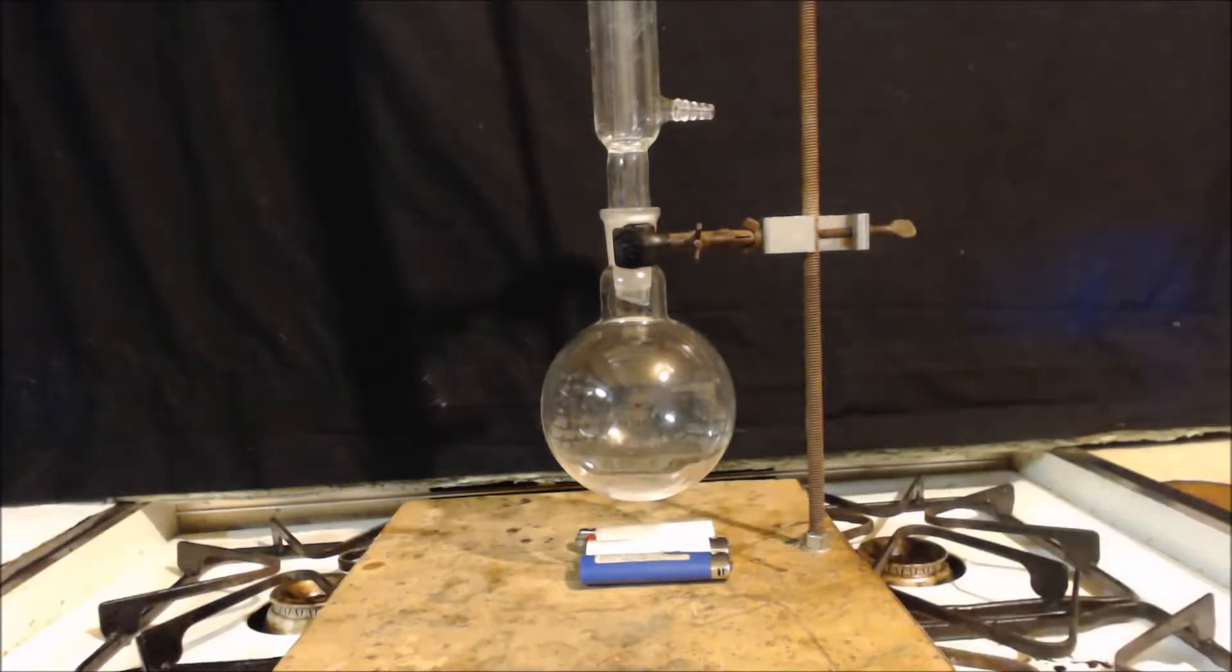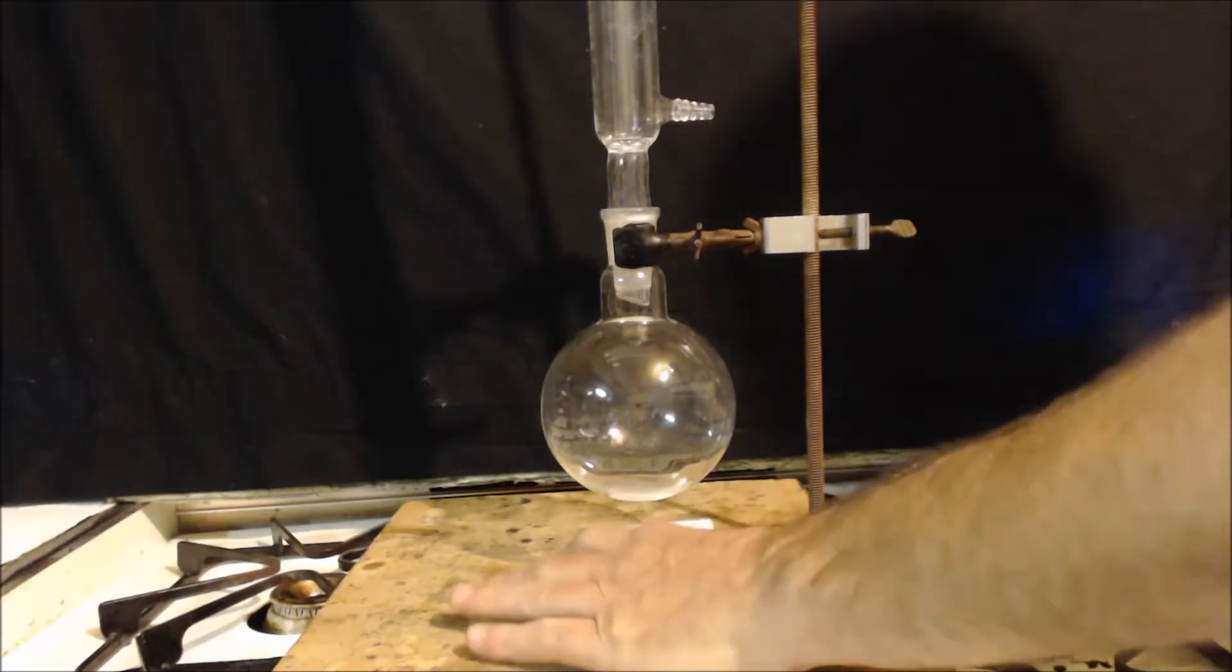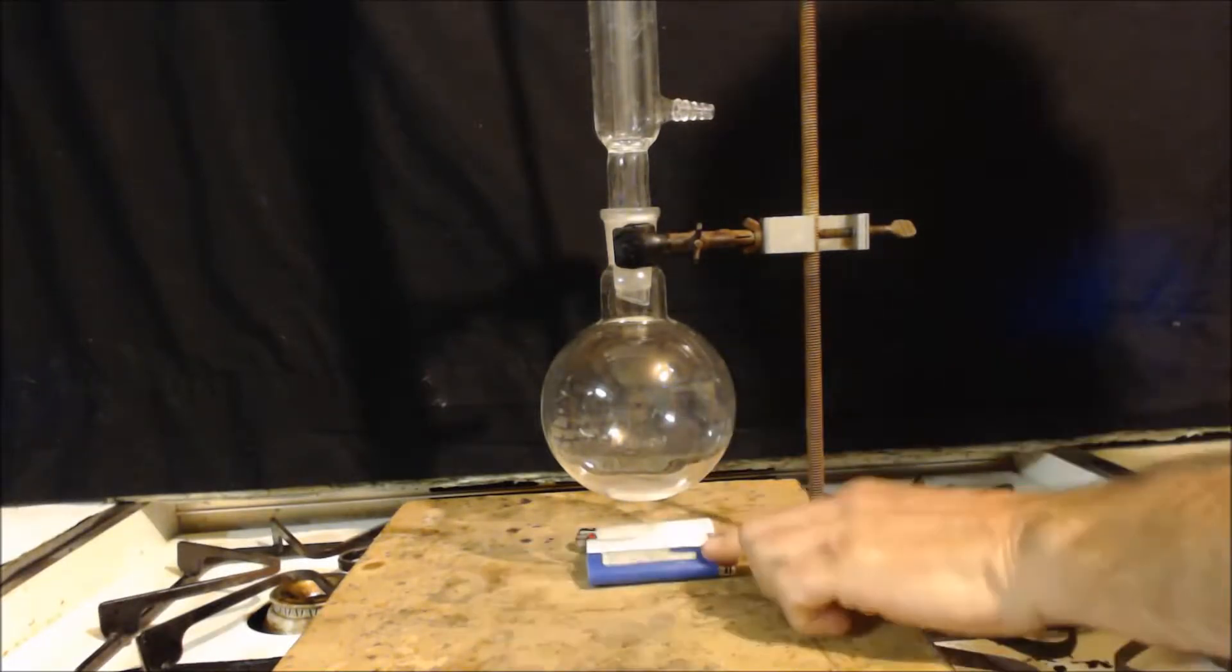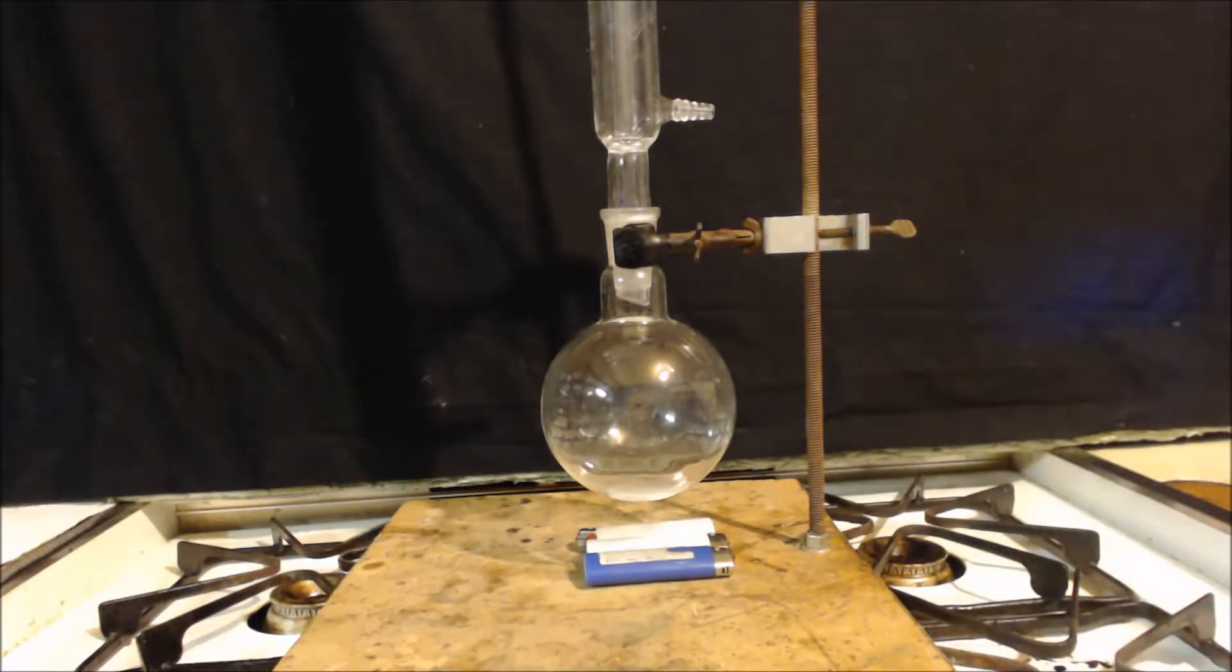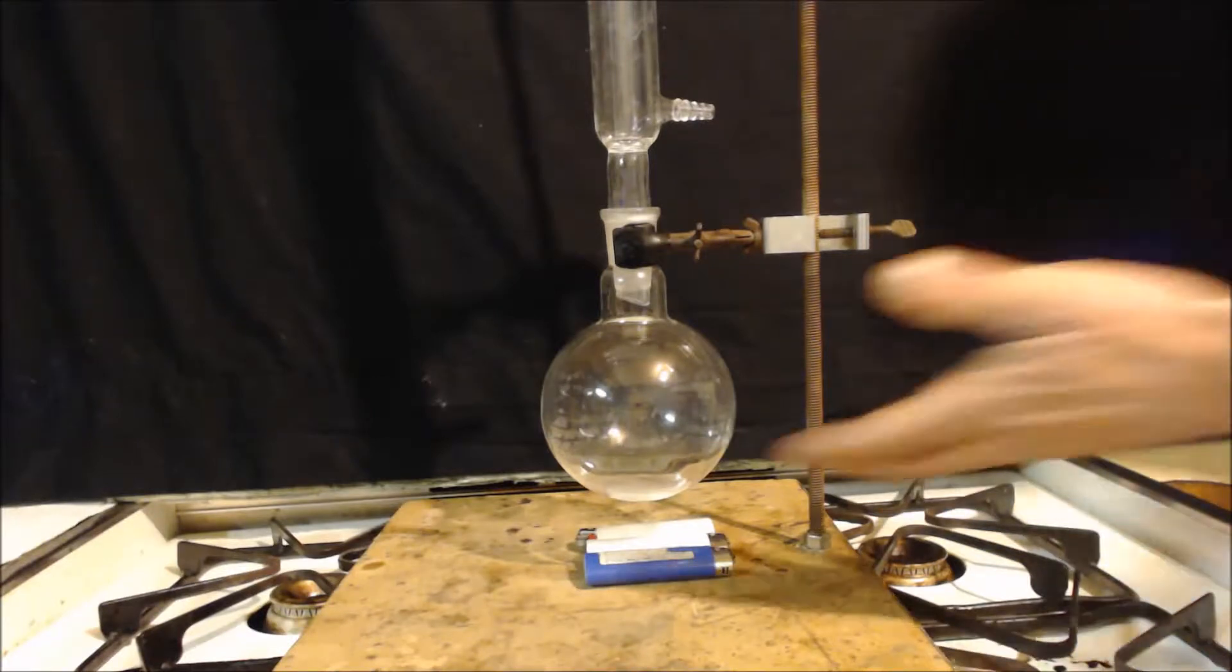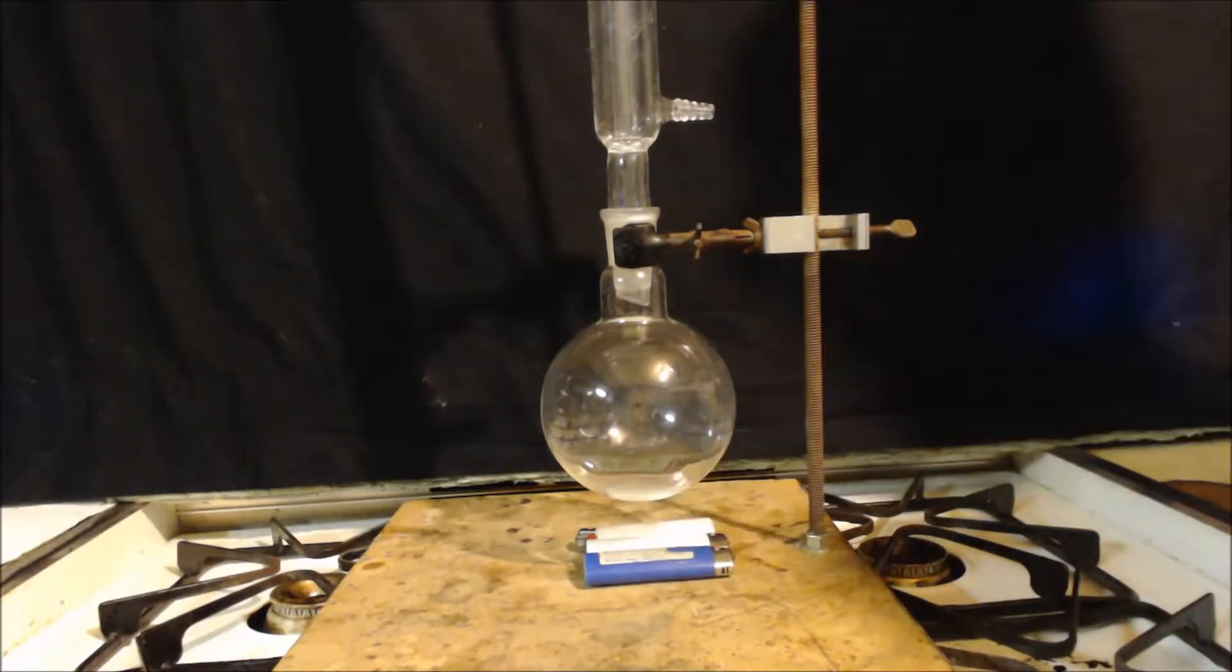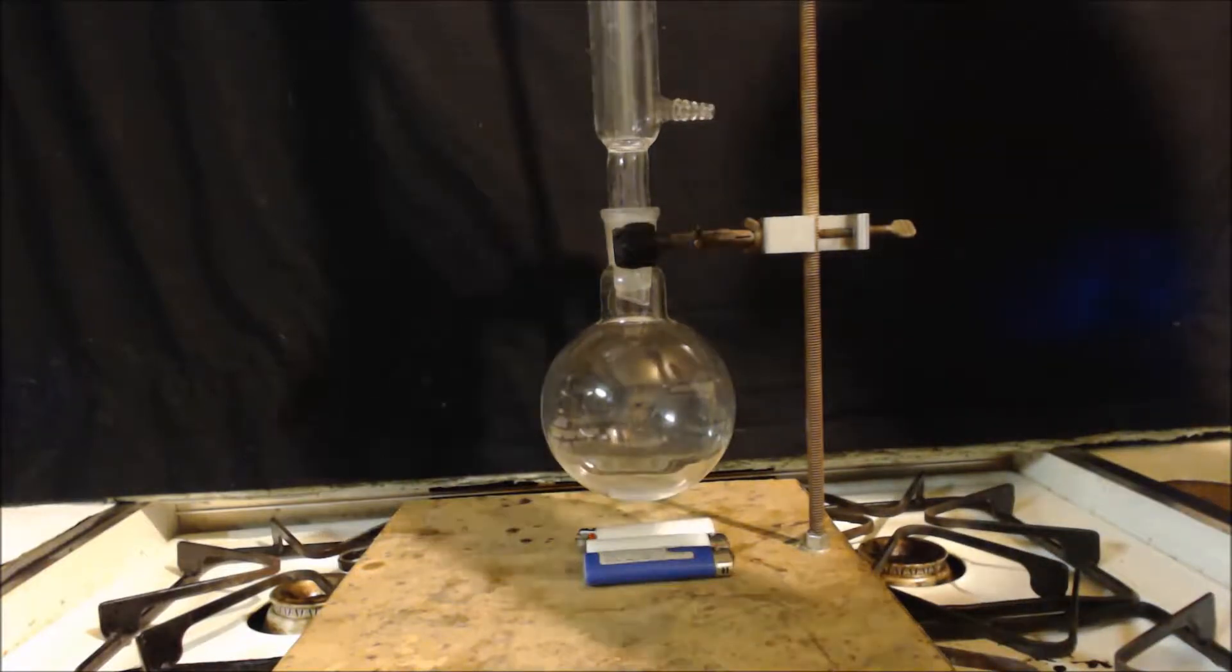Okay, there's basically only three parts to a reflux apparatus. One being your heat source, which I have lighters here to represent that. The pot, the flask that holds the reaction, that's always called the pot. So here we have a 500 milliliter round bottom flask. And the third piece is this condenser.